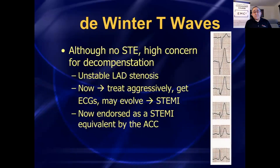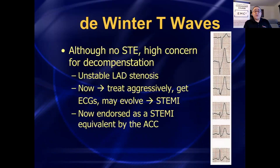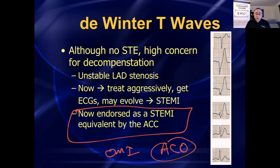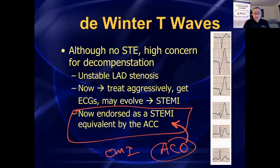So again, what is the de Winter T wave pattern? This is a pattern that everyone needs to know about. It's a sign of an acutely unstable proximal LAD blockage. If you don't treat these patients aggressively, they're probably going to turn into an anterior STEMI in the next several hours. The guidelines are now endorsing this as a STEMI equivalent — or an OMI, an acute coronary occlusion — an acutely unstable proximal LAD, not subacute, not chronic, but acute coronary occlusion. The American College of Cardiology now endorses this as a STEMI equivalent: get them to the cath lab as quickly as possible. Here's the article for your reference.